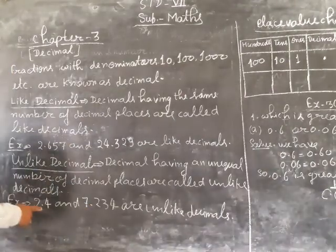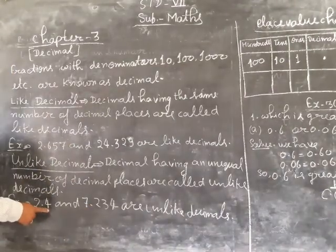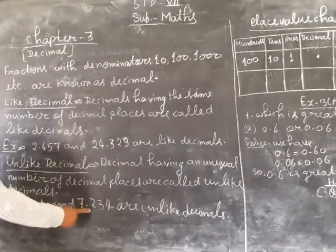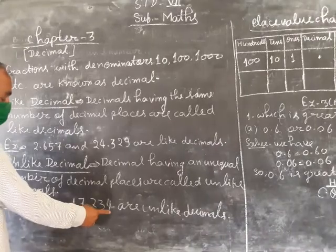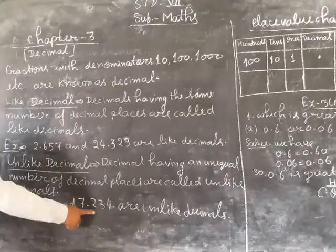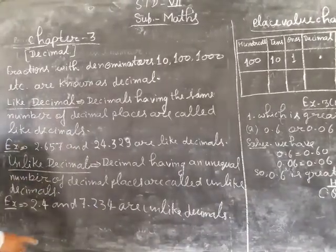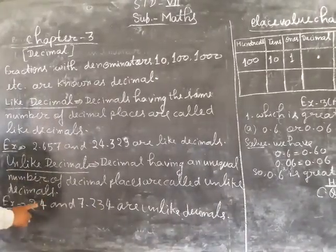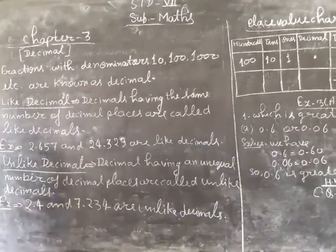If we want to mention one place, one digit, and the other point we want to mention three digits, three places — it is common unlike decimal.